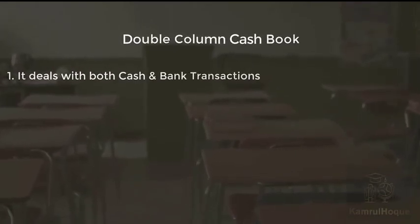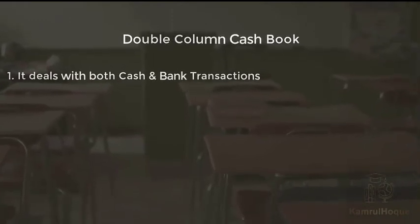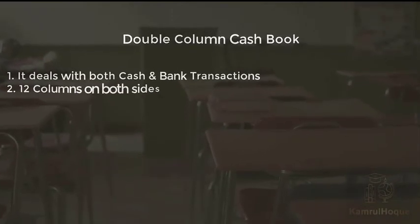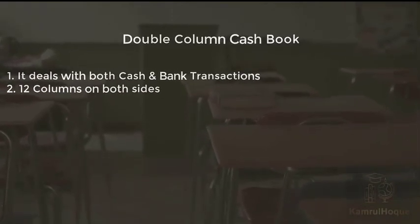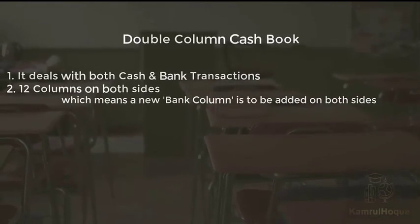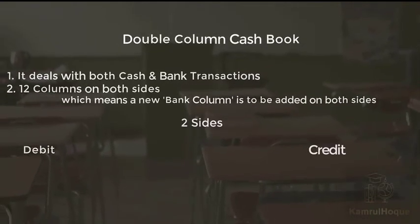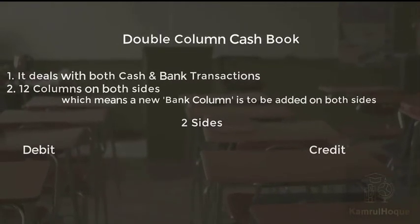Double column cash book deals with both cash and bank transactions. It has 12 columns on both sides — which means a new bank column is added on both sides, on both debit and credit.